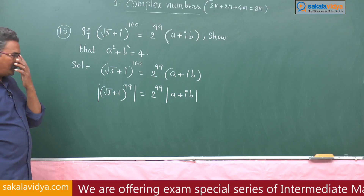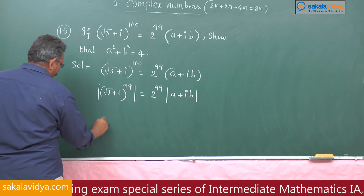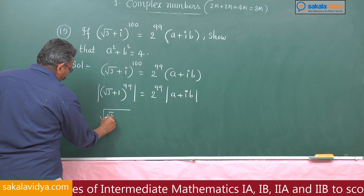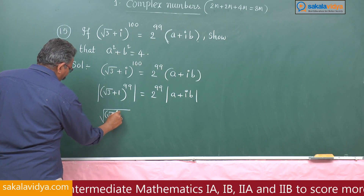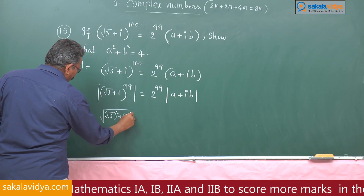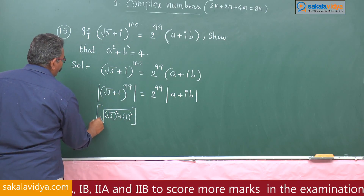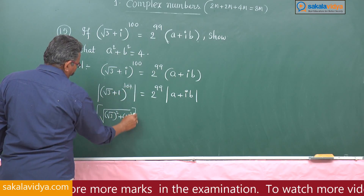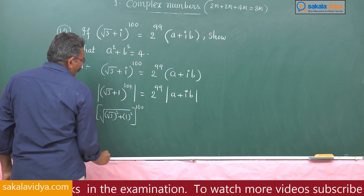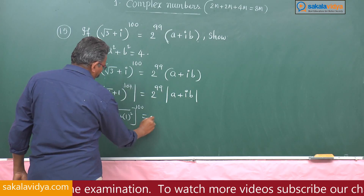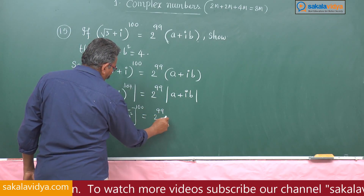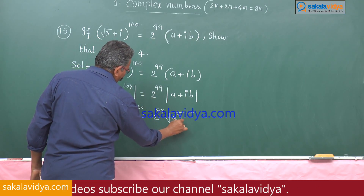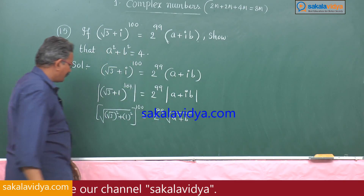The modulus of (√3 + i) is √(√3² + 1²). So |√3 + i|^100 equals 2^99 · √(a² + b²), where √(a² + b²) is the modulus of (a + ib).